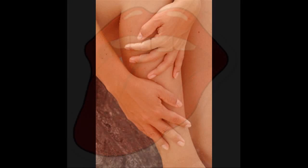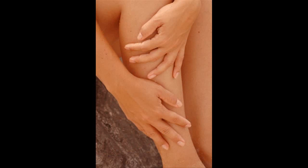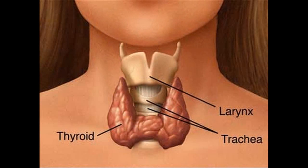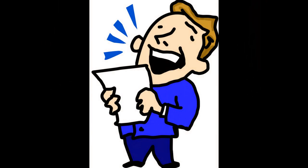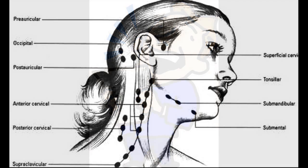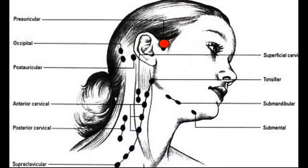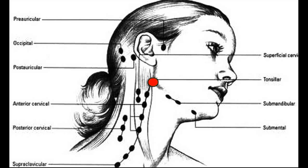Skin warm, dry, and intact. No enlargement or tenderness of thyroid, trachea midline, speech articulates. Lymph nodes — pre and post auricular, occipital, anterior and posterior cervical, submandibular, tonsillar, and supraclavicular.